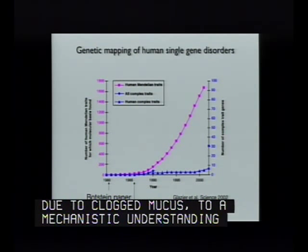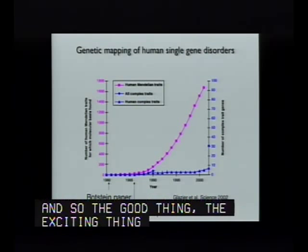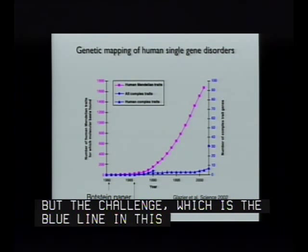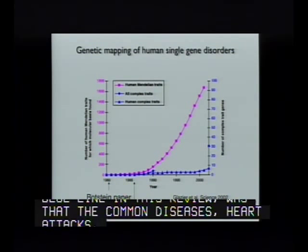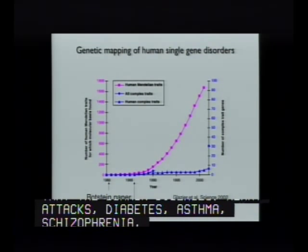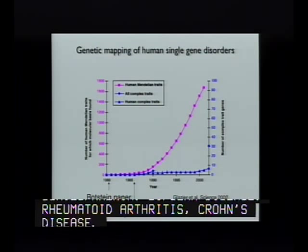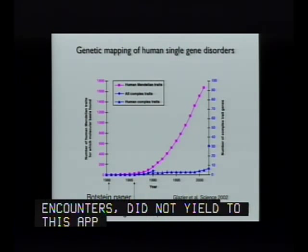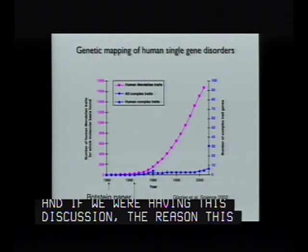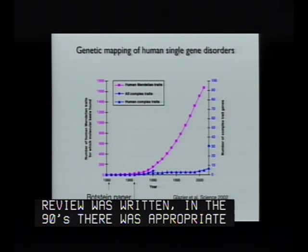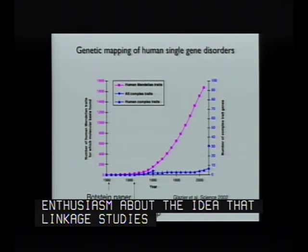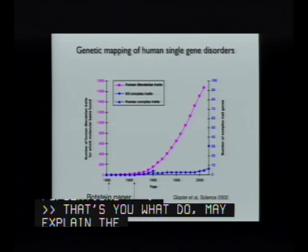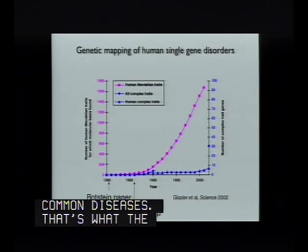The good and exciting thing was this illuminated thousands of human disease genes. But the challenge was that the common diseases—heart attack, diabetes, asthma, schizophrenia, bipolar disease, rheumatoid arthritis, Crohn's disease—the vast majority of patient encounters at Mass General or the NIH, did not yield to this approach. In the 1990s there was appropriate enthusiasm that linkage studies designed to identify rare alleles, often in founder populations, might explain the genetic basis of common diseases. That was also what the company Decode was set up to do. But unfortunately, the diseases did not yield to that approach.